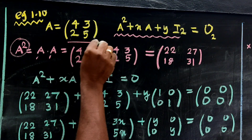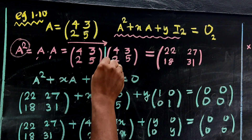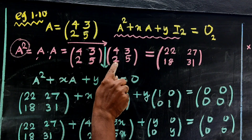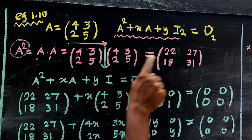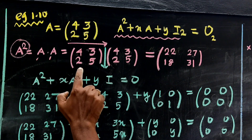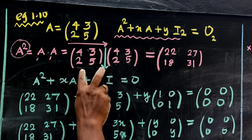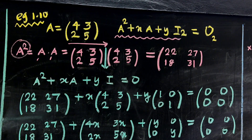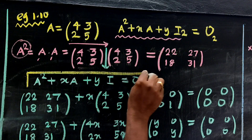If A is a matrix, then the inverse is equal to a matrix. Computing A squared: the first row gives 12 plus 15 equals 27. The second element is 8 plus 10 equals 18. Then 6 plus 25 equals 31. This gives A squared plus xA plus yI equal to zero.